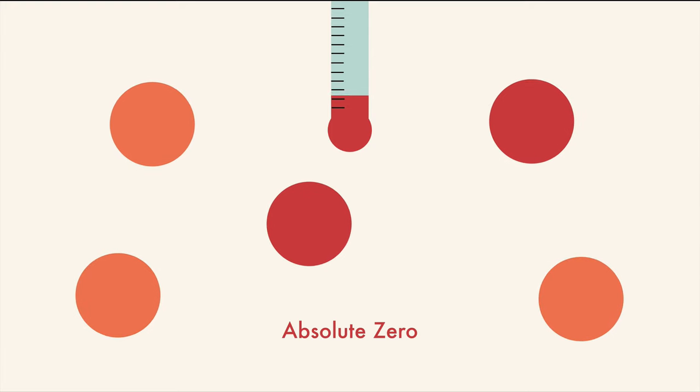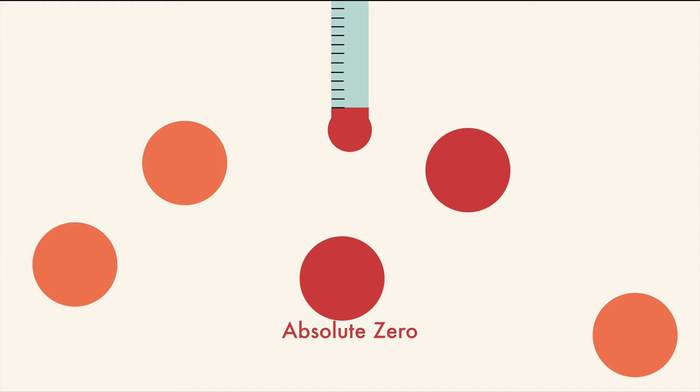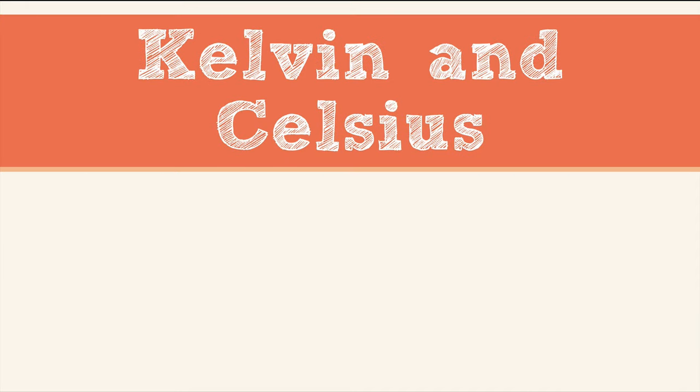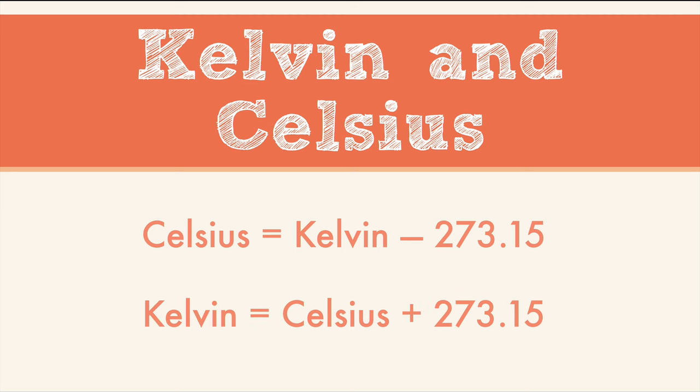Absolute zero is where the kinetic energy of atoms is zero, well, theoretically. It's easy to switch between Celsius and Kelvin. Just subtract 273.15 from Kelvin to get Celsius, or add 273.15 to Celsius to get Kelvin.